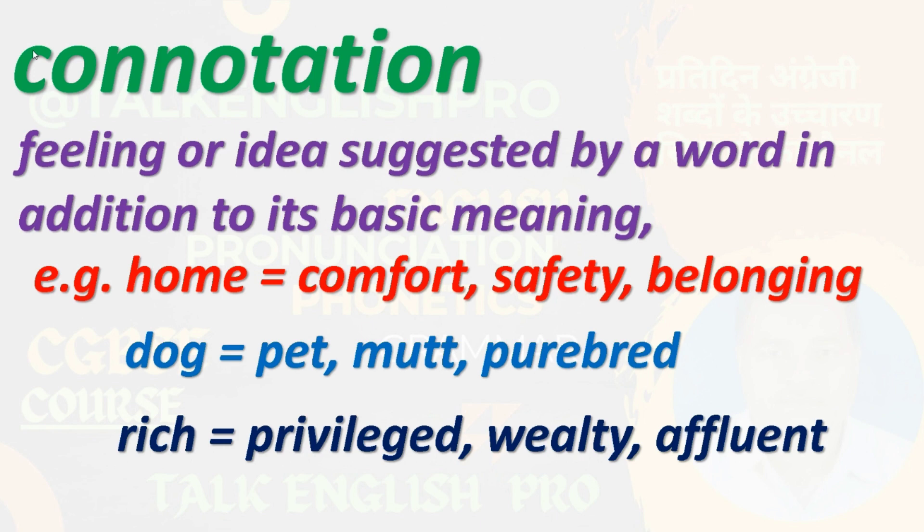Connotation is a feeling or idea suggested by a word in addition to its basic meaning. For example, 'home' suggests comfort, safety, and belonging. 'Dog' can suggest pet, mutt, purebred, or canine. Similarly, 'rich' has synonyms like 'affluent,' 'wealthy,' and 'privileged' — this type of associated meaning is called connotation.